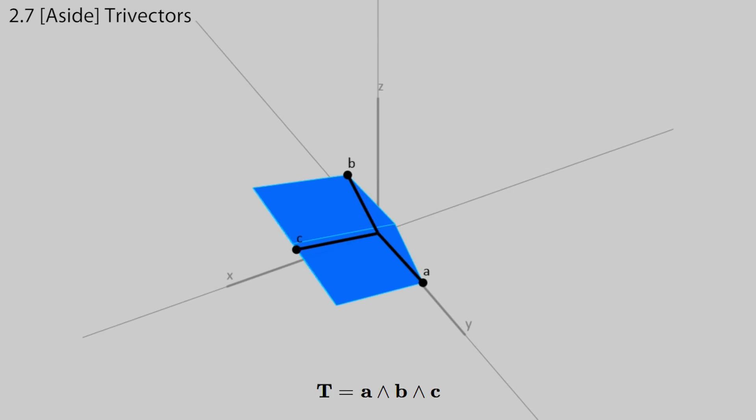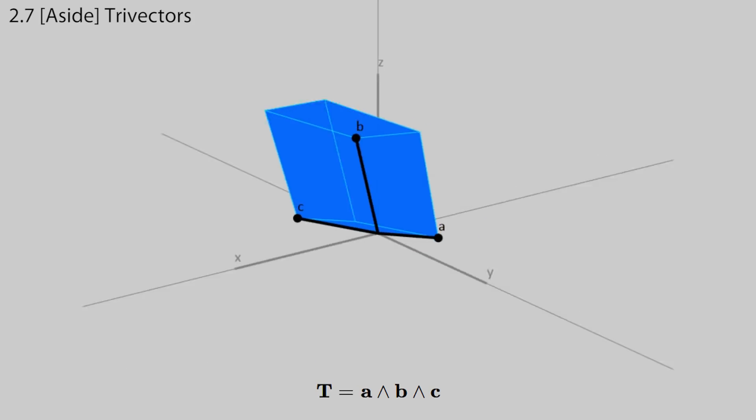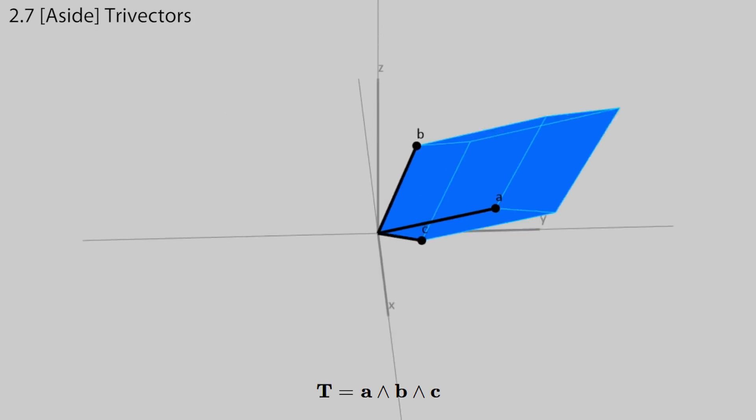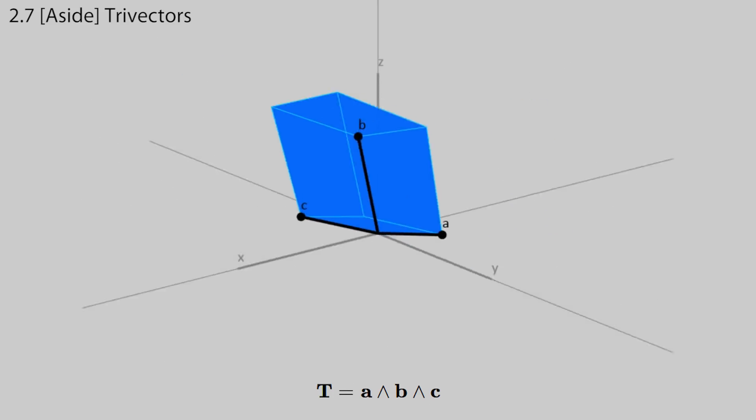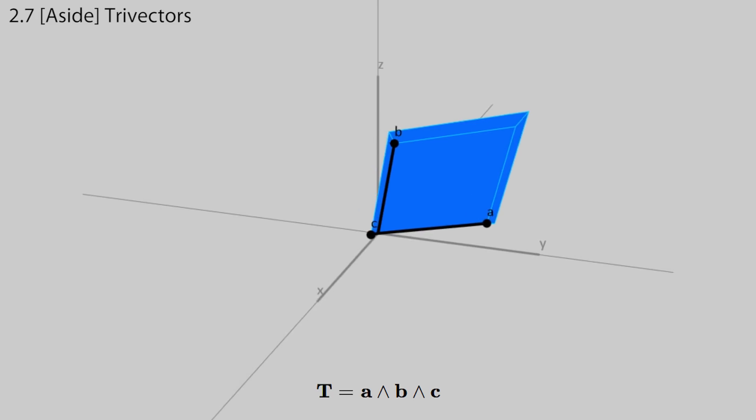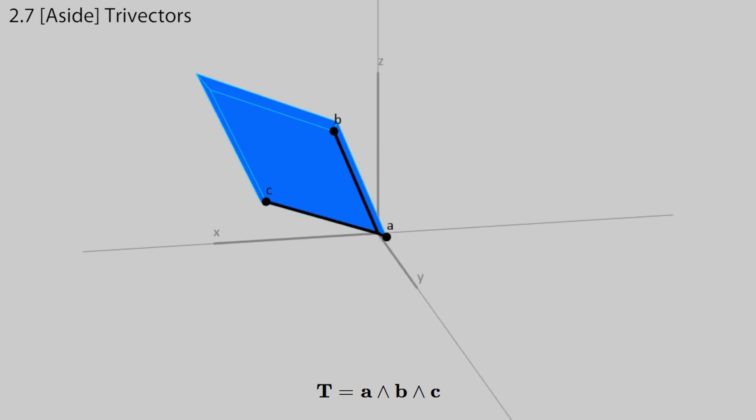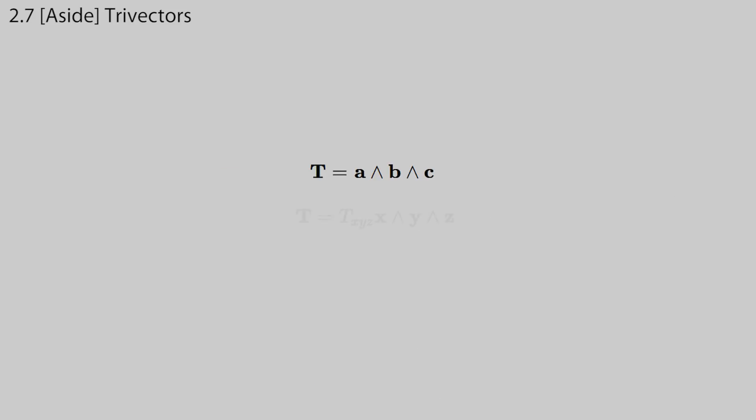We can keep taking the outer product to build not just oriented 2D areas, but oriented 3D volumes as well. A tri-vector T can be built by taking the outer product twice. In 3D, it stops there. Just like in 2D, there's only one plane which fills all of 2D space. In 3D, there's only one volume which fills all of 3D space. In 3D, a tri-vector only has one basis component, equal to the volume of the parallelepiped generated by the three vectors. The triple outer product is a better version of the scalar triple product, because it only involves one kind of operation, returns the correct type, volume instead of scalar, and works in any number of dimensions.